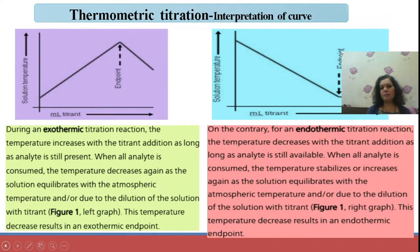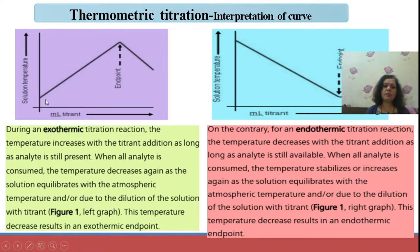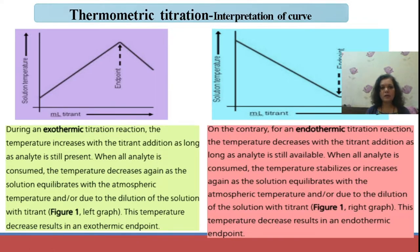Now we will interpret the titration curves obtained during thermometric titration. We plot change in temperature versus mL of titrant added. If the reaction is exothermic, the temperature increases with each addition of titrant to the analyte, rising until all analyte is consumed. Once the analyte is fully utilized, excess addition of titrant causes a decrease in temperature. Extrapolation of these straight lines gives the end point of the exothermic titration.